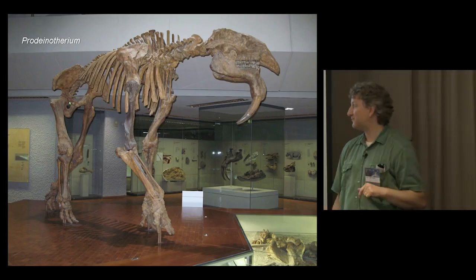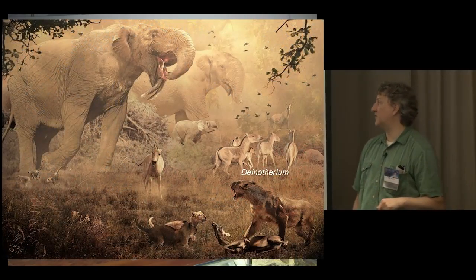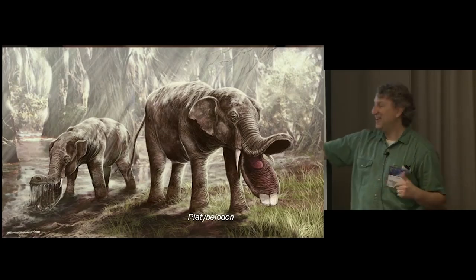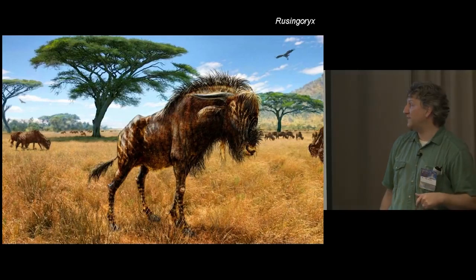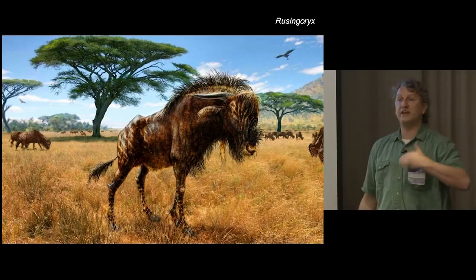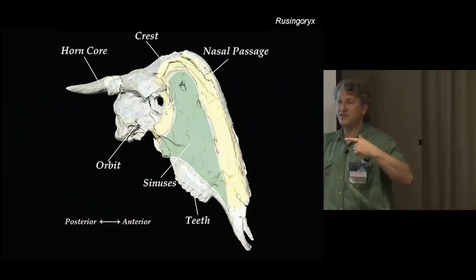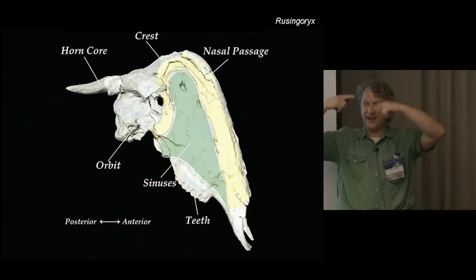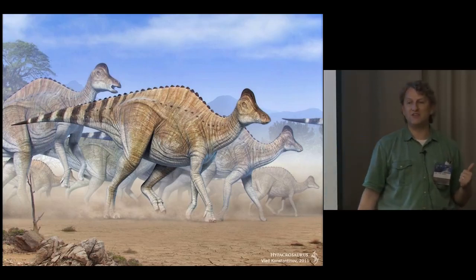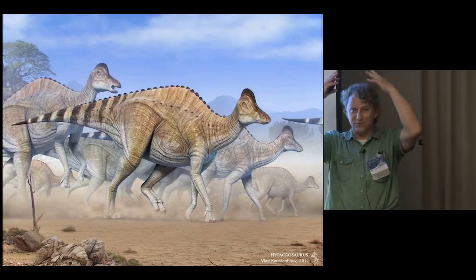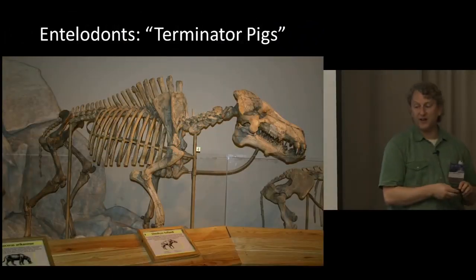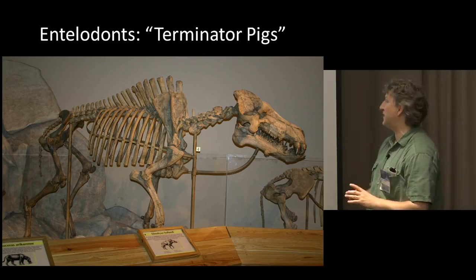Through forms like Moeritherium we get eventually the deinotheres, where the upper tusks were suppressed and the lower tusks were huge - Deinotherium itself was one of the largest land mammals of all time. Then came the mastodons and from them the shovel-tuskers, and eventually the true elephants. Even in familiar groups like antelopes and wildebeest there are surprises: Rusingoryx has a nasal passageway that does a big loop up and back, very reminiscent of hadrosaur crests, and very likely was used similarly to generate sound.